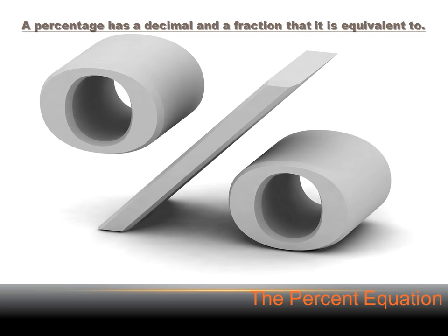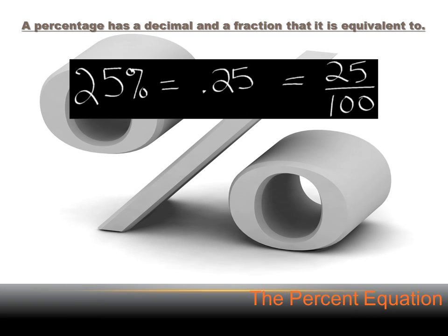Somebody will tell you that 50% of the people in your class got A's, and you'll know that means half the people in the class got A's. The first thing you need to remember is that for every percentage, there's an equivalent decimal and an equivalent fraction. You need to know how to go back and forth between percentages, decimals, and fractions.